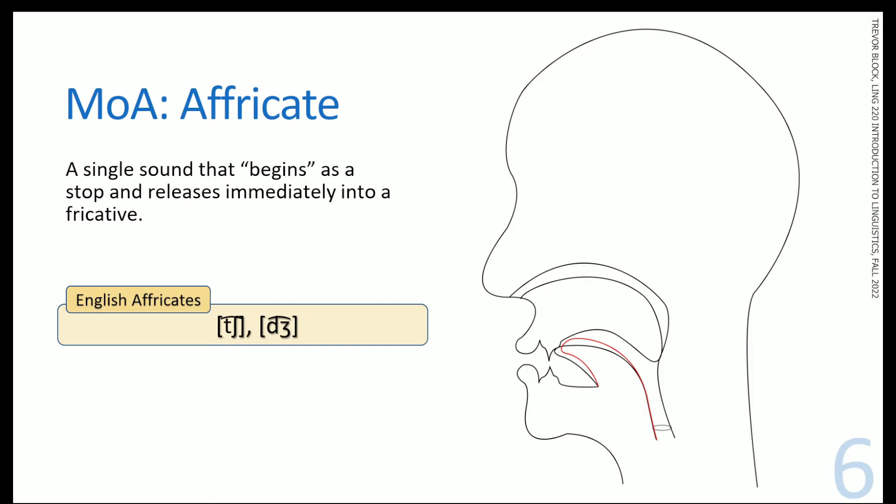The last one we're going to talk about today is an affricate. Face diagrams are not really possible to draw for these affricates. And that's because these are sounds that essentially have two articulations happening near simultaneously. First, it starts at a stop position and then it releases immediately into a fricative. So that's why these symbols like ch are two sounds with a tie bar. It starts as a t, it releases as a sh.